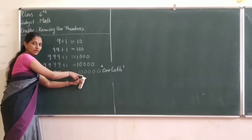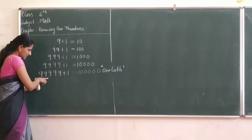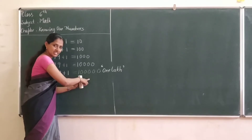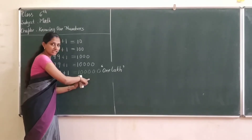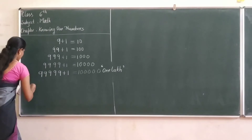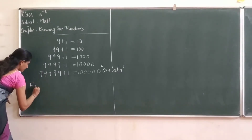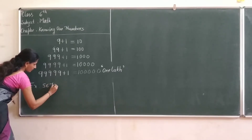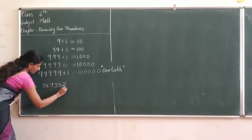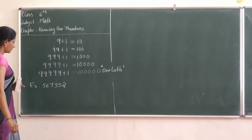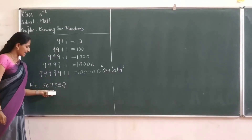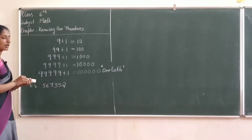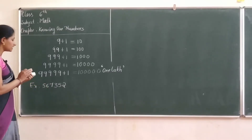While we are adding 1 to the greatest 5-digit number, we are getting the smallest 6-digit number. I will write a 6-digit number. Can you write it as a number? You have to write it with a number.